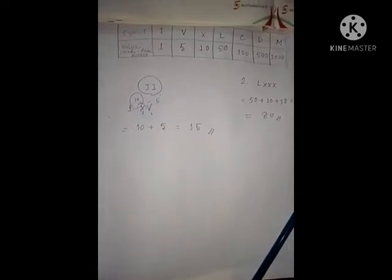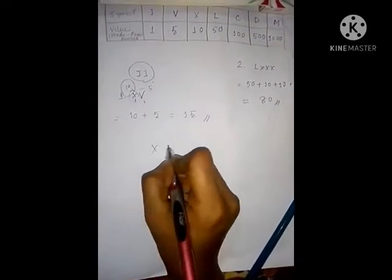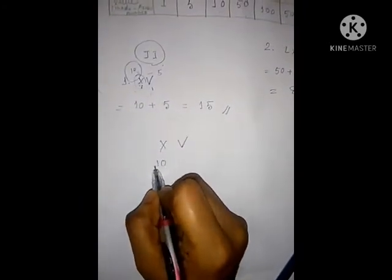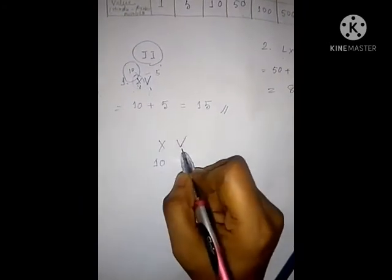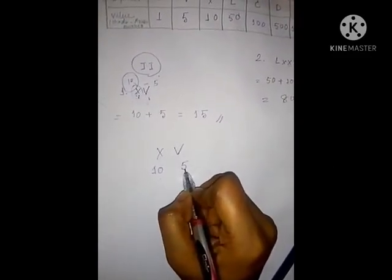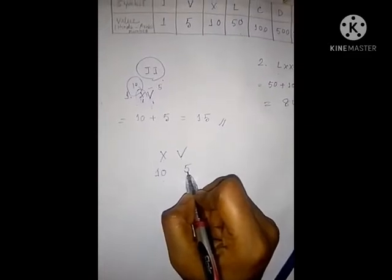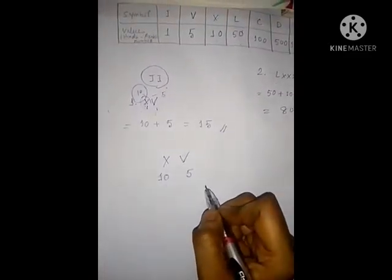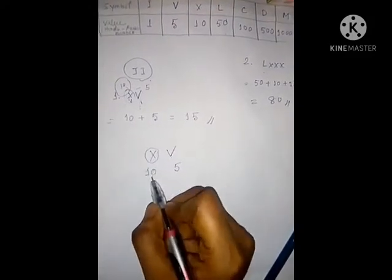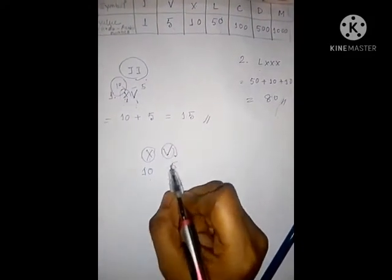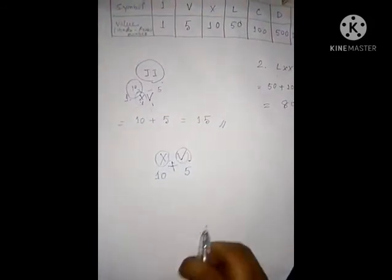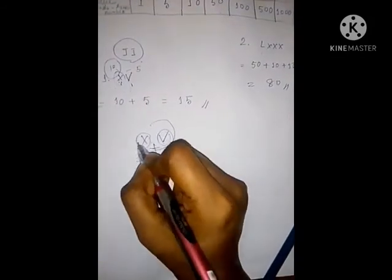Let's listen to Rule 3 again. The symbol X has a value of 10, and V has a value of 5. According to Rule 3, if one or more symbols are placed after the symbol of greater value, we add the values together.